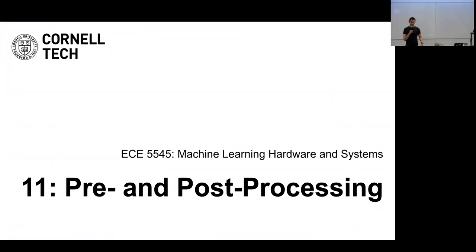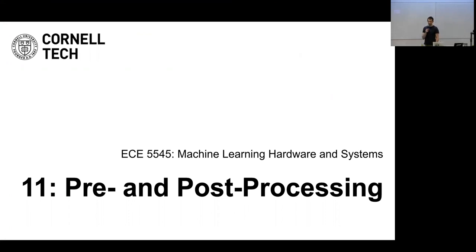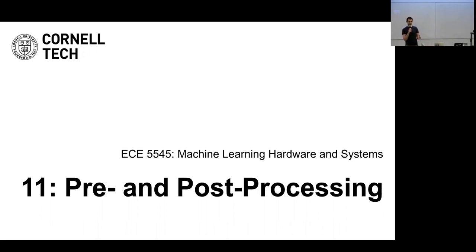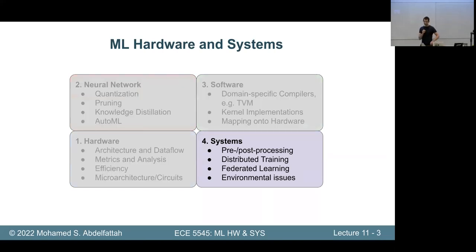Today we'll talk about what's going on when you're running a deep neural network — it's not the only thing running. This is an emerging topic, unlike quantization or pruning which are well-established in neural network efficiency. People are only starting to pay attention to this now. We'll discuss important ideas around overheads in pre- and post-processing in a DNN-centric computation model. This also marks the beginning of our last module — about four more lectures to go. This is the first lecture in the systems module.